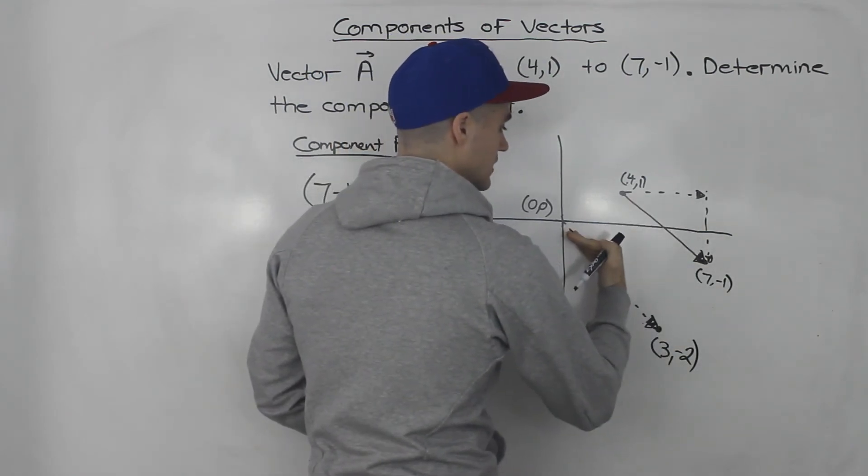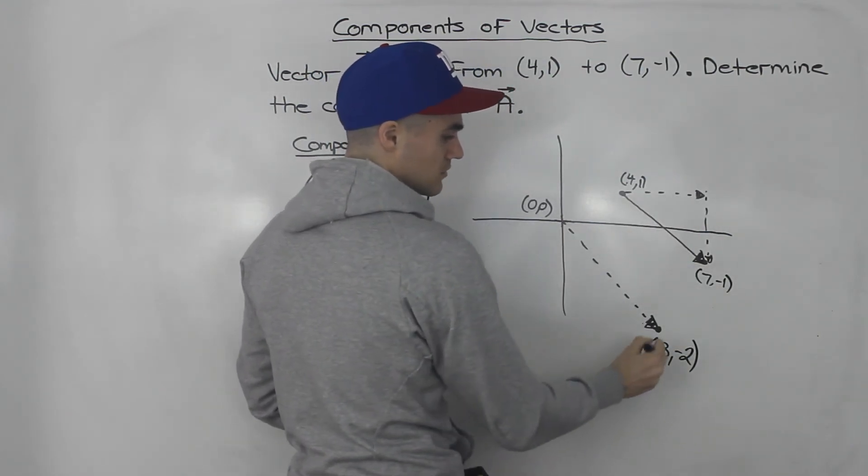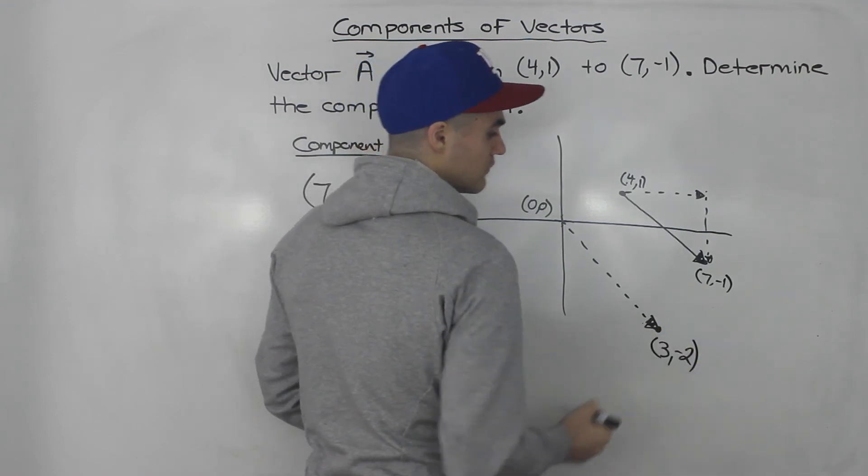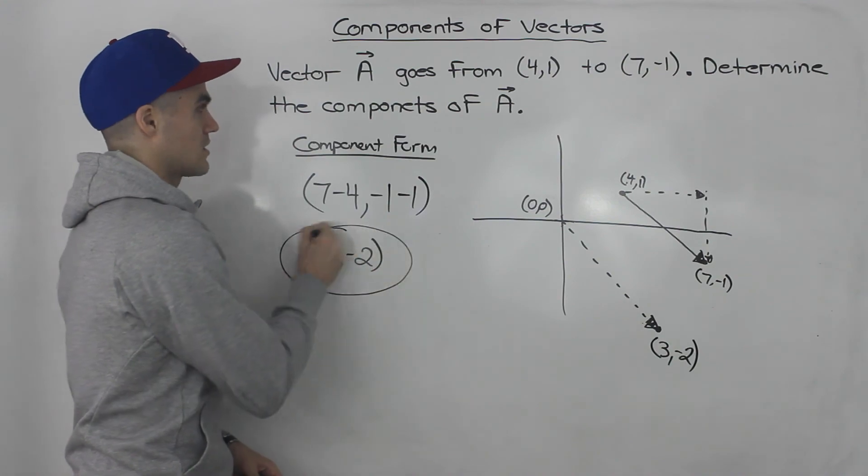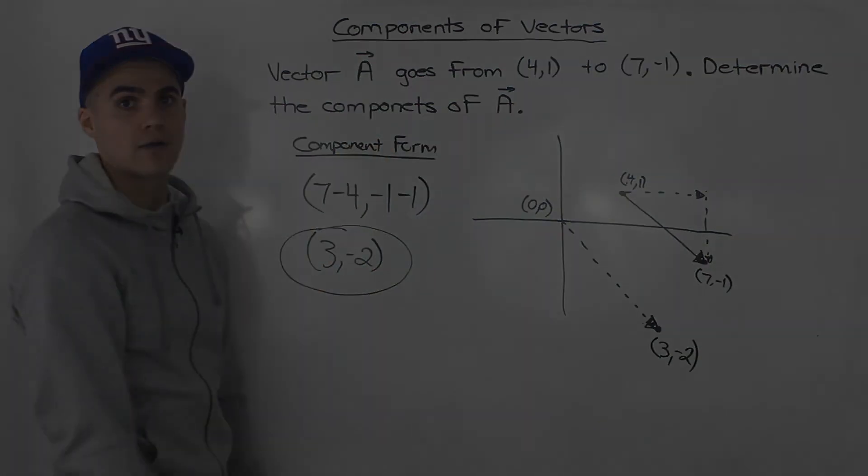So if we took this, shifted it here where it started at (0,0), that would be the equivalent vector in component form. That there is your answer to that question.